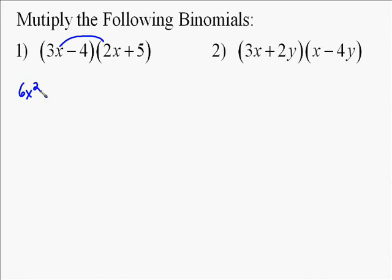But the real thing is to understand what you're doing, and that is each term in the first binomial, so 3x, is multiplied by both terms in the second. So 3x times 2x gives me 6x squared. 3x times 5 gives me 15x.